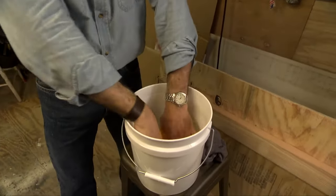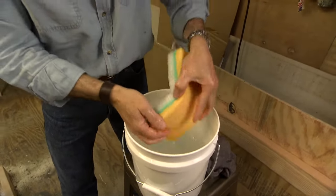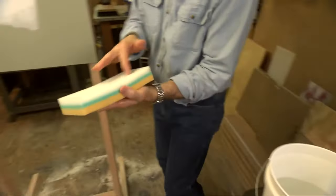So you get the sponge, dip it into a bucket of warm water, and you want to squeeze out the excess because otherwise you just have water dripping all over the place. You want to get out all the excess, then use the scouring side of the sponge to smooth out the joint compound.